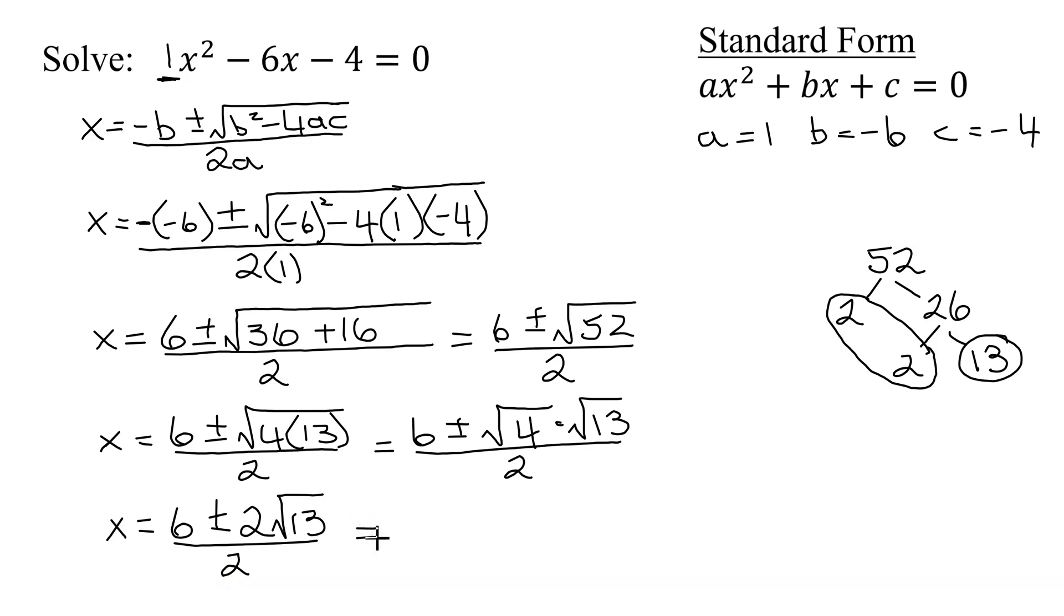So we're going to have to reduce this answer. And the simplest way is to divide the 2 into both terms in the numerator. So I'm going to have 6 over 2 plus or minus 2 times the square root of 13 over 2.